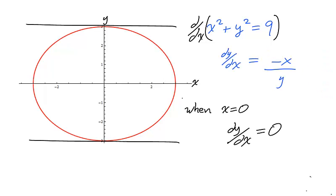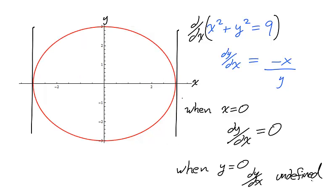When x equals 0, the tangent line has a 0 slope, meaning it is a horizontal line. We can see that at the top and the bottom of our circle. When y equals 0, the tangent line has an undefined slope. Here, it is vertical. You can see that on the left and on the right of the circle.